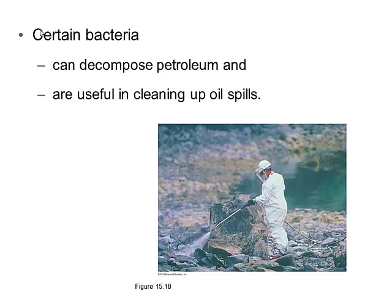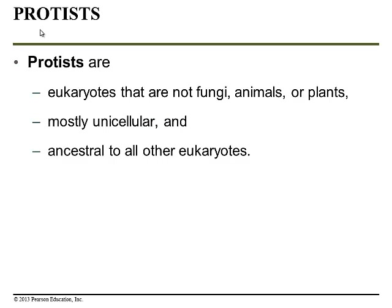Some bacteria can decompose petroleum, and they're really helpful in cleaning up oil spills. Protists are eukaryotes that are not fungi, not animals, and not plants — mostly unicellular, and they are ancestors to all other eukaryotes. This is kind of an in-between group, and we will pick up with these on Monday.